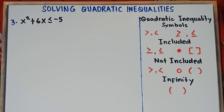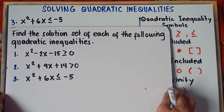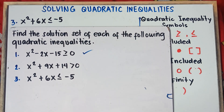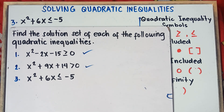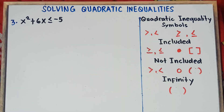This is already part 3 of our video class. In part 1 we solved number 1, and in part 2 we solved number 2. If you want to learn more about parts 1 and 2, I will just put the links in the description down below. So for number 3, we'll be answering x squared plus 6x is less than or equal to negative 5.